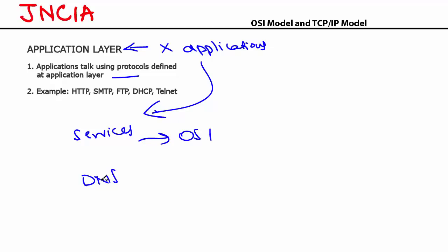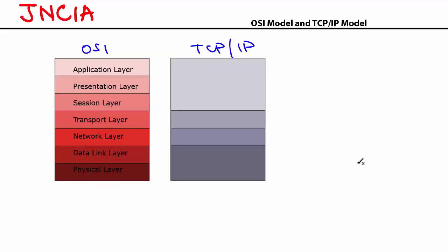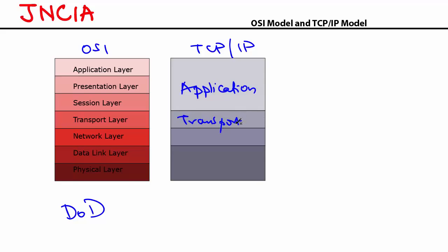Let's look at the TCP/IP model, which is slightly different from the OSI model. The TCP/IP model was developed by the Department of Defense and is pretty similar to the OSI model. The major difference is that the OSI model has seven layers, but the TCP/IP model only has four layers. The top three layers of the OSI model combine to form the application layer in TCP/IP. The transport layer remains as the transport layer. The network layer is known as the internet layer. The data link layer and physical layer are called the network access layer.